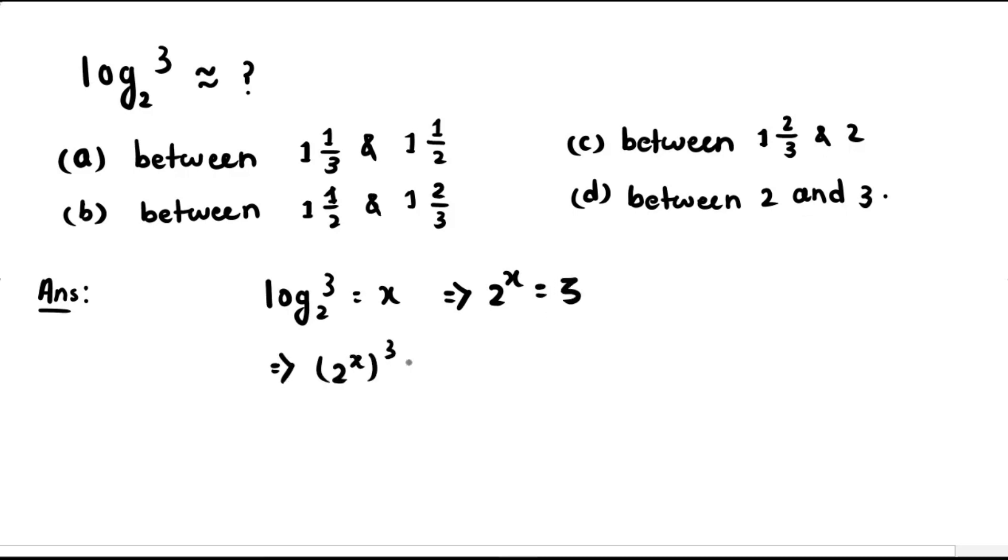Now we raise both sides to the power of 3. Notice that 3³ is equal to 27, and 27 is less than 32, which is equal to 2⁵. This means that (2^x)³ will be less than 32, which is equal to 2⁵.